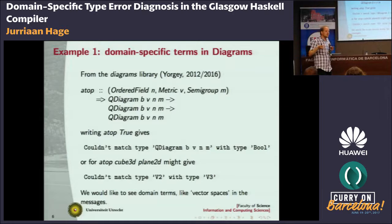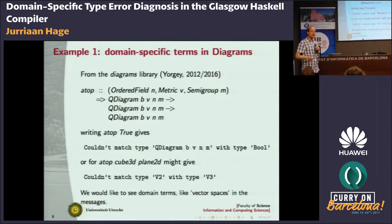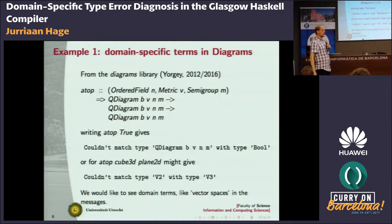B represents the back-end, M represents the metrics layer — these all mean something to the developer of this domain-specific library, but Haskell doesn't notice because you'd have to build in domain information about all the EDSLs implemented on Hackage. But wouldn't it be nice if the EDSL developer could add this kind of information to his library so the error message would talk about vector spaces instead? Well, that's what I do.